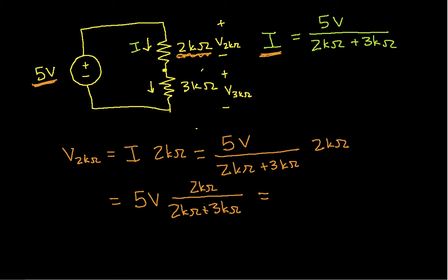And if I work this out, this is going to be 5 volts times 2,000 over 2,000 plus 3,000, which when I work it out is going to end up giving me 2 volts. So that's a really handy result. It turns out to be general and it turns out to be very useful.